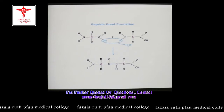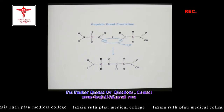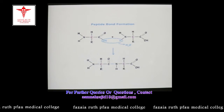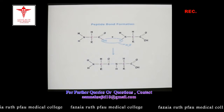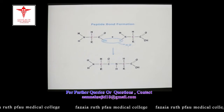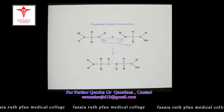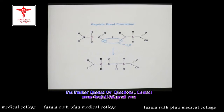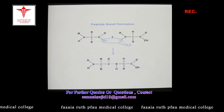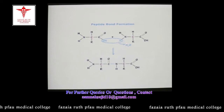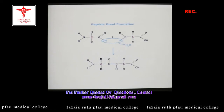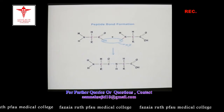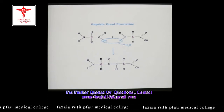Amino acids link together via covalent bonds known as peptide bonds. This figure shows the formation of a peptide bond, which involves the removal of a water molecule from the carboxyl group of one amino acid and the amino group of another. One amino acid contributes its hydrogen and the other its hydroxyl group, resulting in removal of water. The resultant bond between the carbon and the nitrogen is the peptide bond through which the two amino acids are linked.